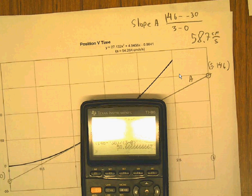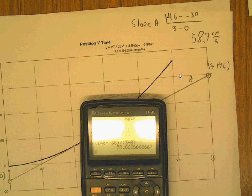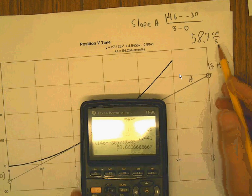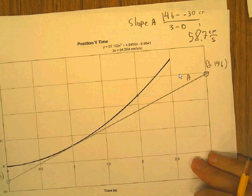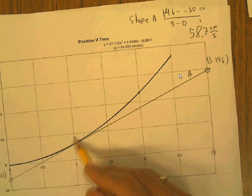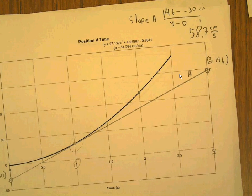And then the slope of a position graph is velocity. So that's why I'm labeling it centimeters per second, because this is centimeters and these are seconds. So it's rise over run. Notice that I was tangent at one second.